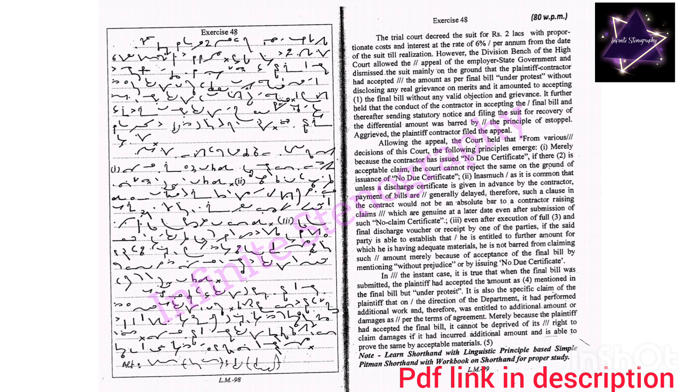the division bench of the High Court allowed the appeal of the employer state government and dismissed the suit mainly on the ground that the plaintiff contractor had accepted the amount as per final bill under protest without disclosing any real grievance on merits and it amounted to accepting the final bill without any valid objection and grievance. It further held that the conduct of the contractor in accepting the final bill and thereafter sending statutory notice and filing the suit for recovery of the differential amount was barred by the principle of estoppel.